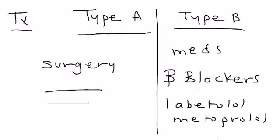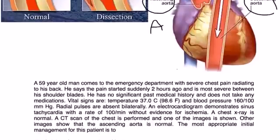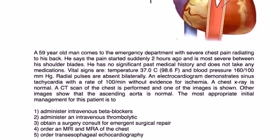So that's a very brief rundown of the aortic dissection topic. I have one clinical vignette that I wanted to go through. And here we go. A 59-year-old man comes to the emergency department with severe chest pain radiating to his back. He says the pain started suddenly two hours ago and is most severe between his shoulder blades. He has no significant past medical history and does not take any medications.